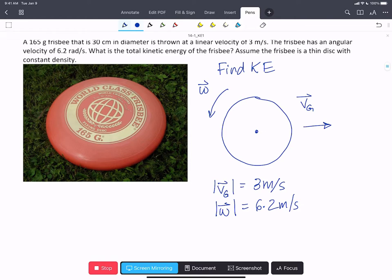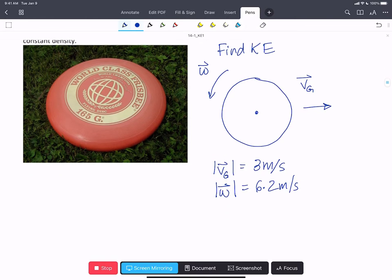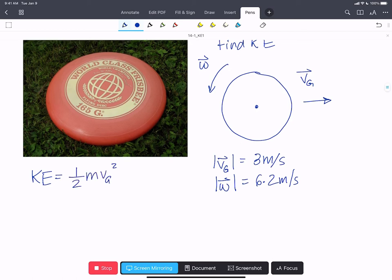So our equation for the kinetic energy of an object in general plane motion is one-half m vg squared plus one-half ig omega squared, where vg and omega are the scalar linear and angular velocities.